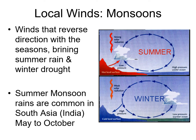Monsoons are winds that reverse direction with the seasons, bringing heavy summertime rain and dry conditions in the winter. We have two seasonal conditions for South Asia, which is occupied largely by India.